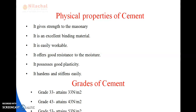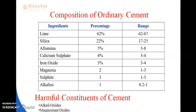Next, we have been taught about the grades of cement. There are three types: Grade 33, Grade 43, and Grade 53. Grade 33 has a strength of 33 Newton per millimeter square, Grade 43 has 43 Newton per millimeter square, and Grade 53 has 53 Newton per millimeter square.